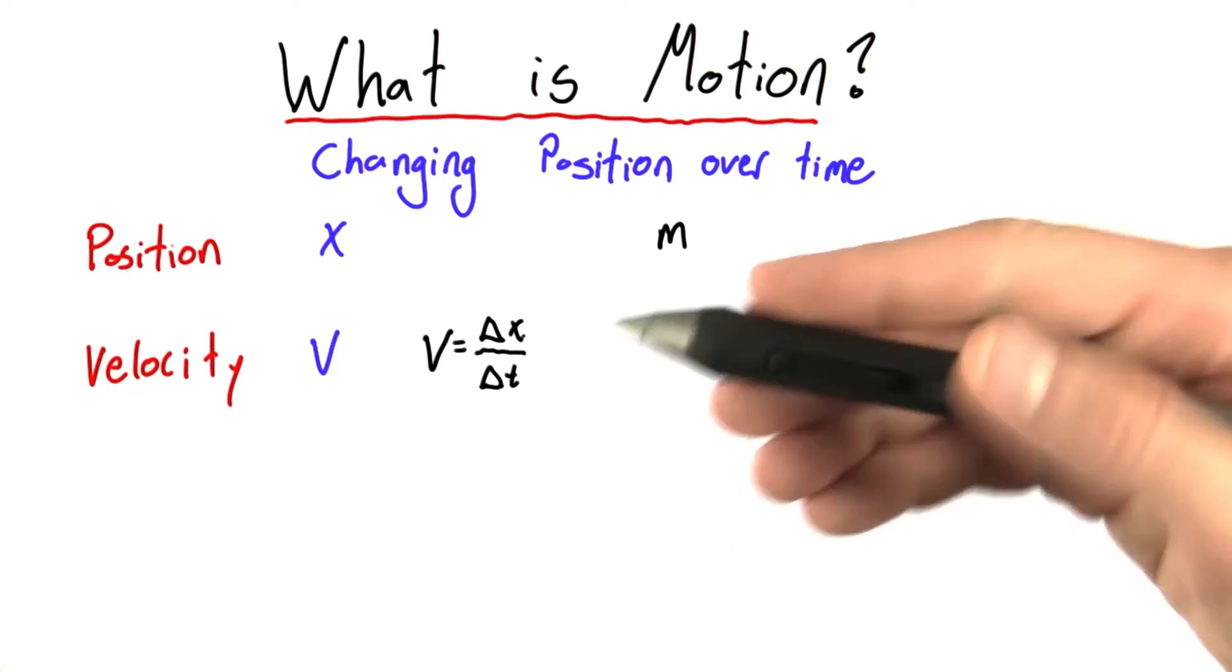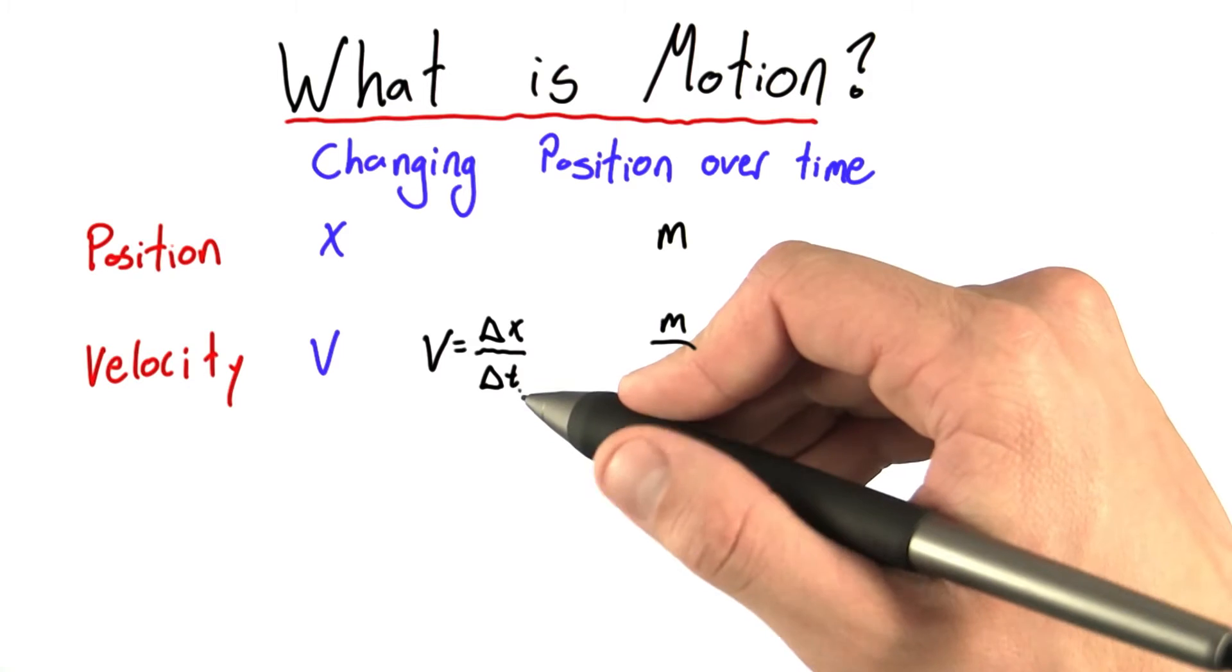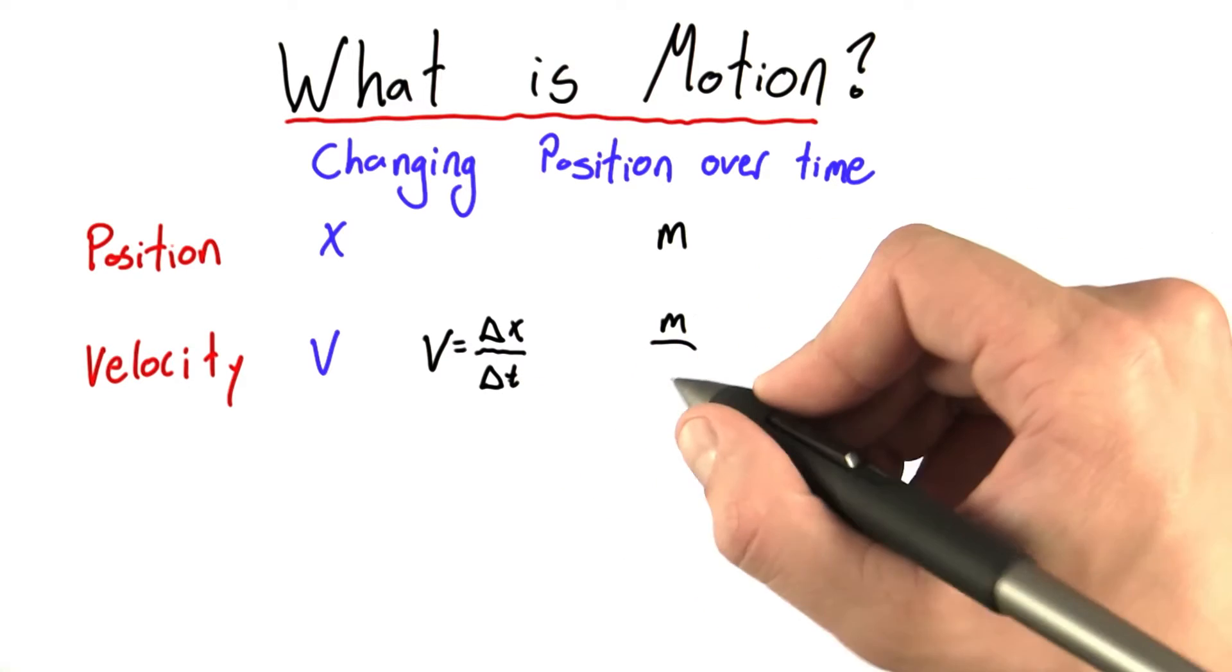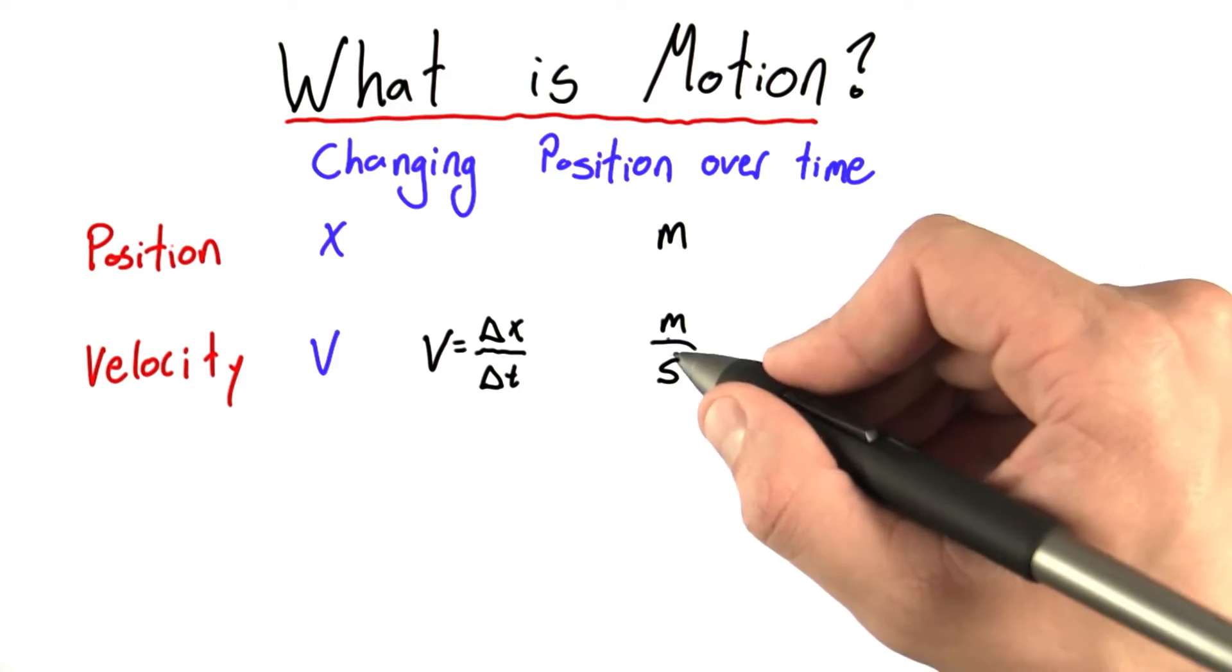Well, velocity is just position, which is meters, divided by some unit of time, and the unit of time we like to use is the second. So meters per second.